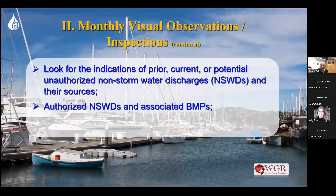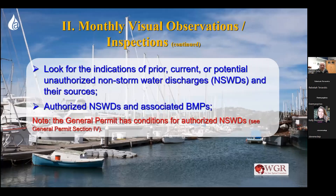You're looking for indications of current or prior unauthorized non-stormwater discharge. If you walk around and nothing's flowing off property at the time, but you see staining or evidence that something left your property, you need to determine — was this authorized? Was it just irrigation water or maybe air conditioning condensate? I had one client where air conditioning units constantly dripped down to one area of their property and actually left the property — it was very minimal but it still discharged, so they had to document it. But it was authorized.